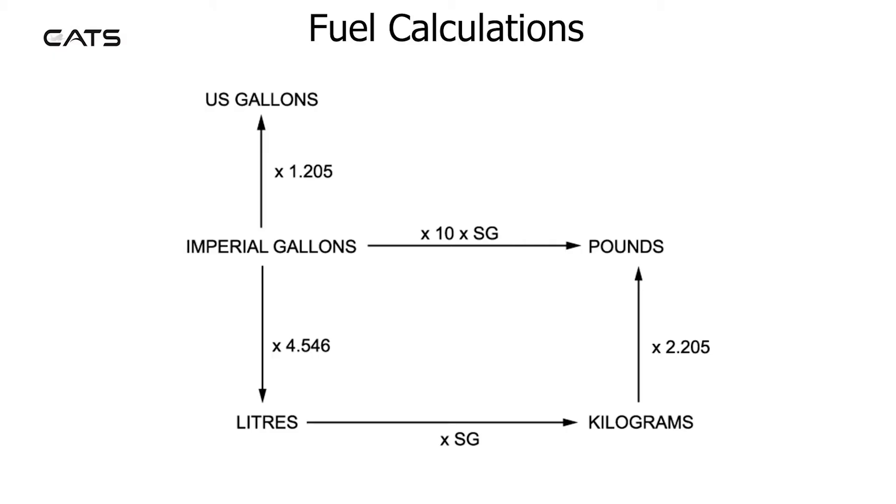Fuel calculations. Imperial gallons may be converted to US gallons by multiplying by 1.205. Imperial gallons may be multiplied by 10 and by specific gravity to gain pounds.